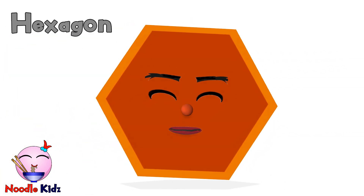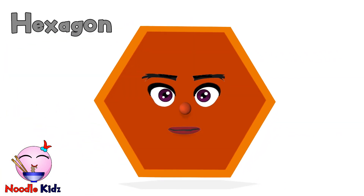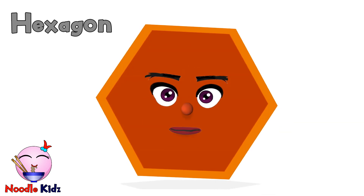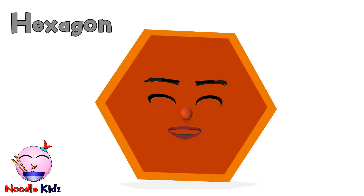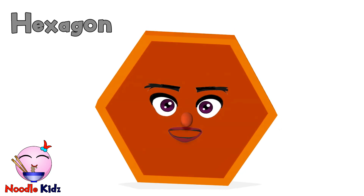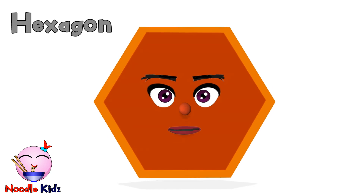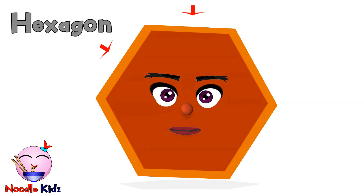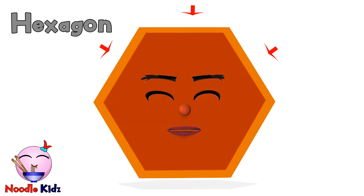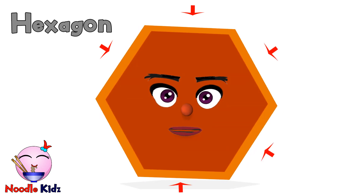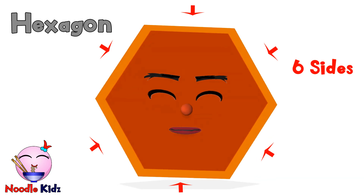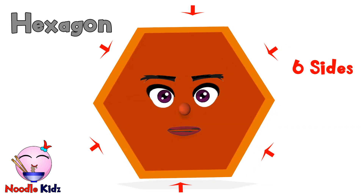I am a hexagon. Can you help me? I need to see how many sides I have. Let's find out: 1 side, 2 sides, 3 sides, 4 sides, 5 sides, 6 sides. That's right — I have 6 sides.